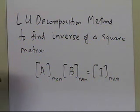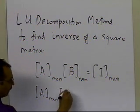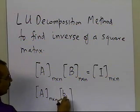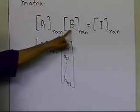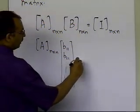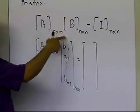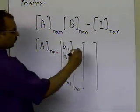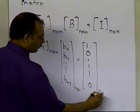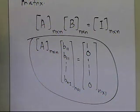In order to do this, I'll have to solve a certain number of equations. What I'll have to do is solve A (n-by-n) and take the first column of the B matrix — b11, b21, all the way up to bn1 — equal to the first column of the identity matrix, which is 1, 0, 0, all the way up to 0, an n-by-1 matrix. So to find the first column of the inverse, I'll solve this set of equations.